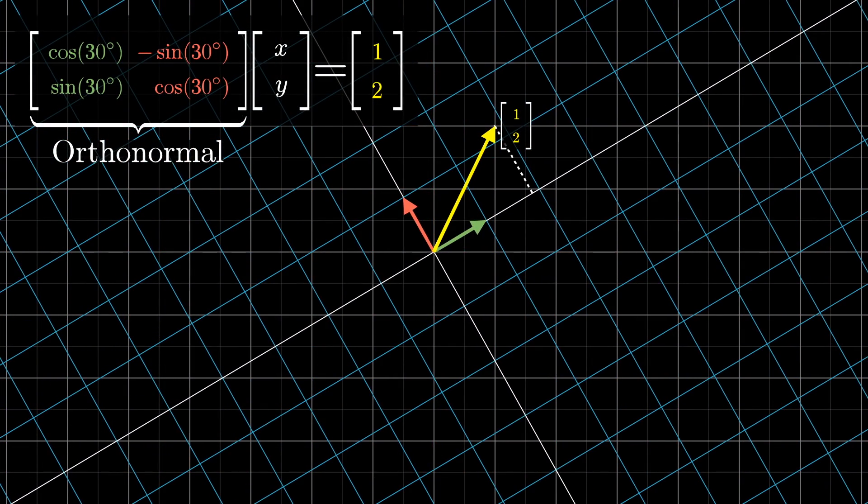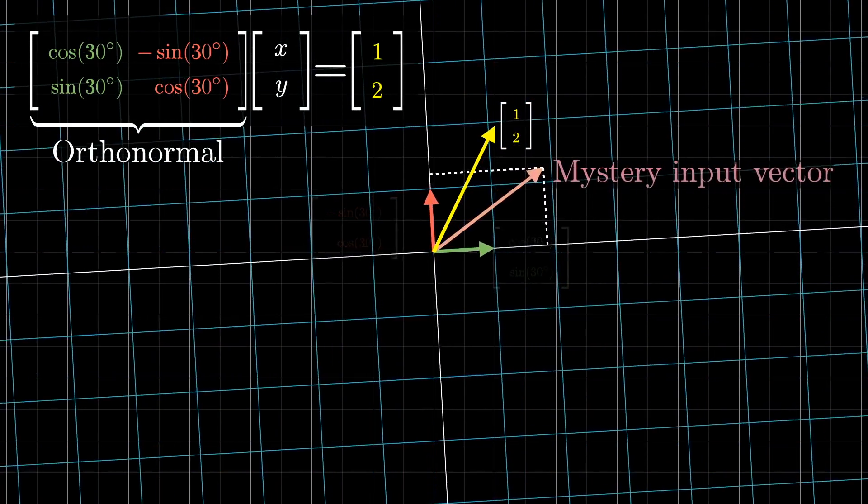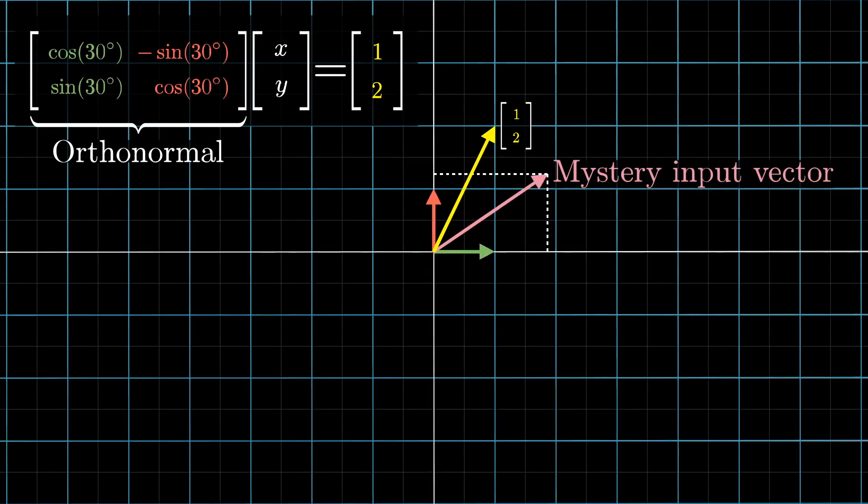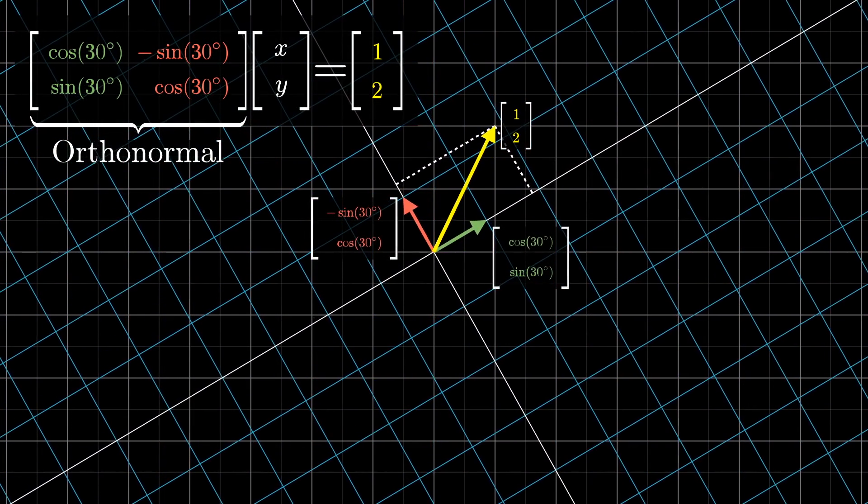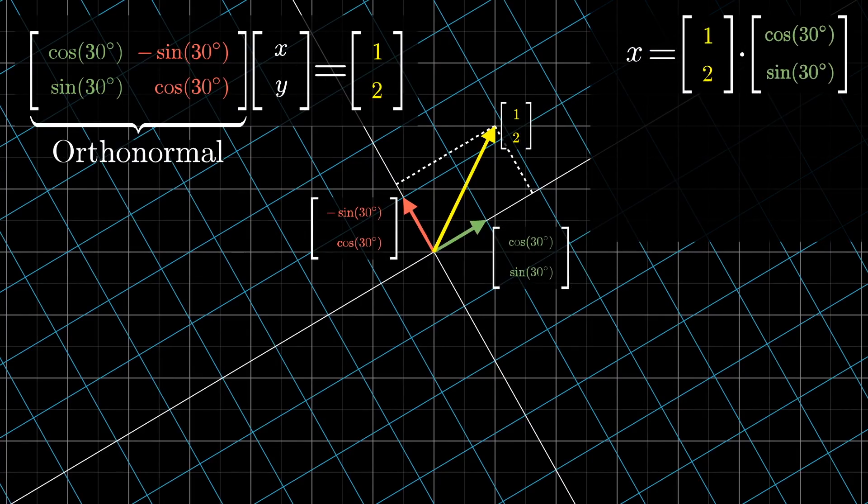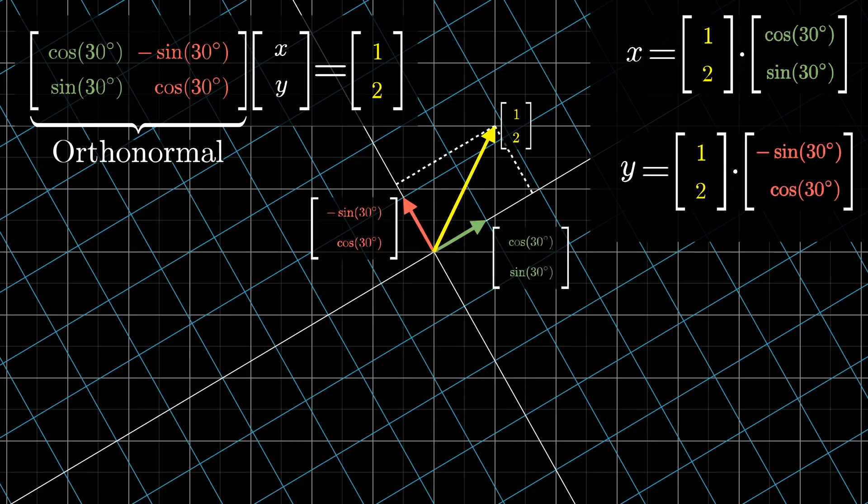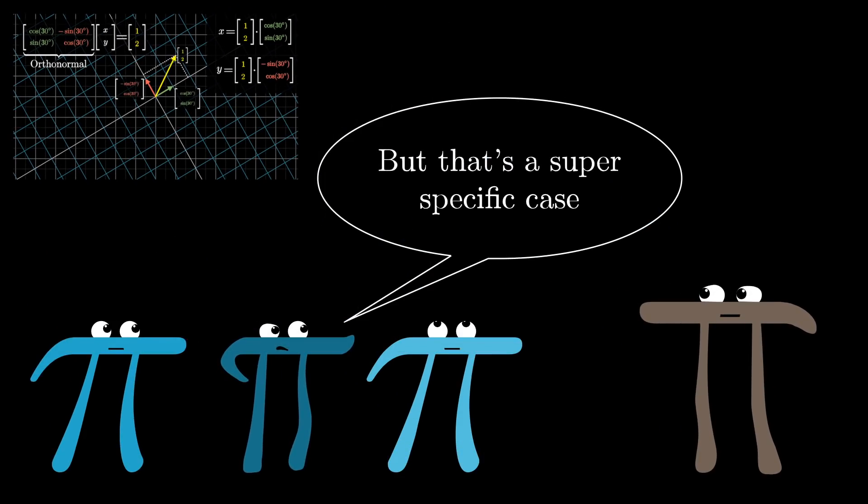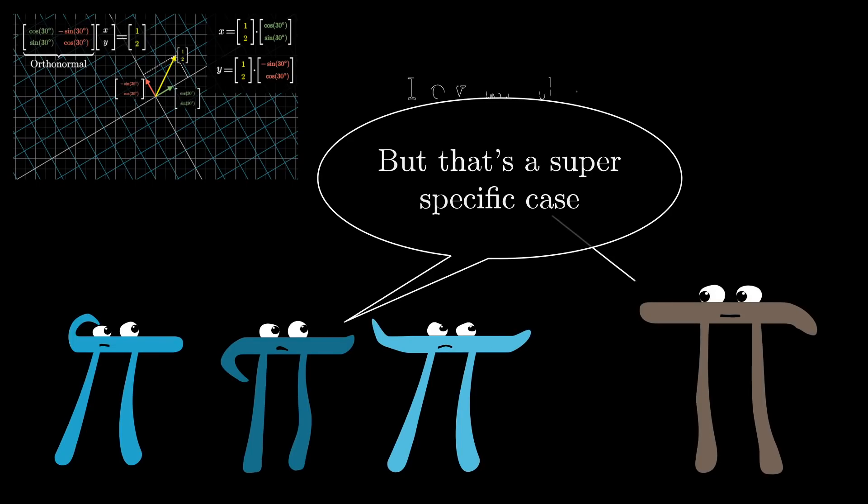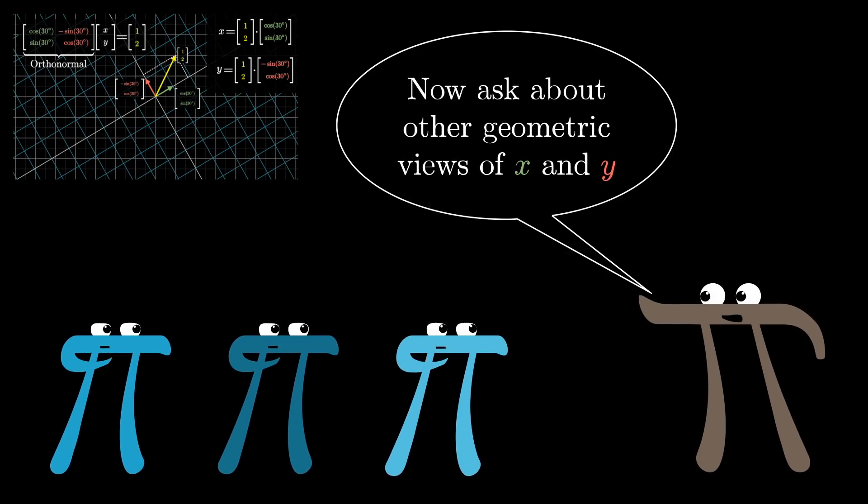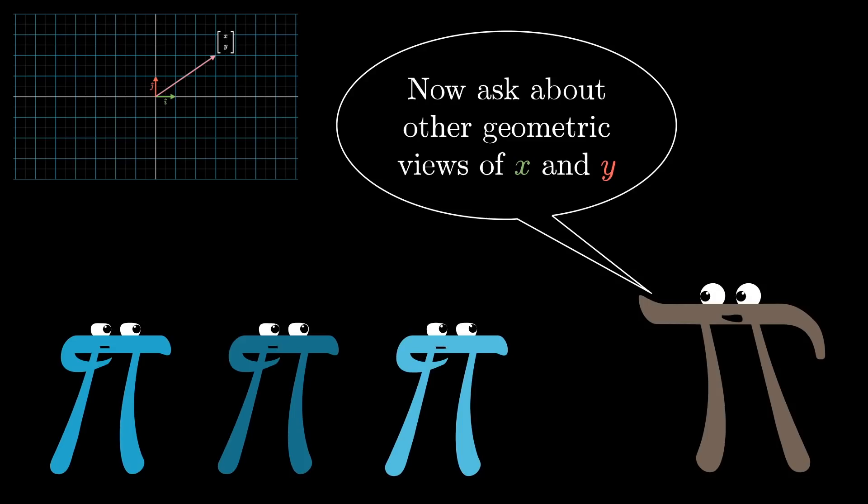Solving a linear system with an orthonormal matrix is actually super easy. Because dot products are preserved, taking the dot product between the output vector and all the columns of your matrix will be the same as taking the dot product between the mystery input vector and all of the basis vectors, which is the same as just finding the coordinates of that mystery input. So in that very special case, x would be the dot product of the first column with the output vector, and y would be the dot product of the second column with the output vector.